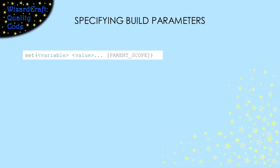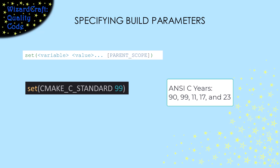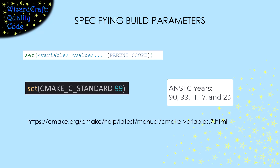One of the things that makes CMake really powerful is that you can control a million things. There is a long list of settings variables that you can individually set. When I'm building plain C programs, the one I use most is CMAKE_C_STANDARD, which lets me specify the ANSI C version I want the compiler to meet. You do that by specifying the year of the standard — those are 90, 99, 11, 17, or 23. Here's a link to the entire list of variables that you can play with.